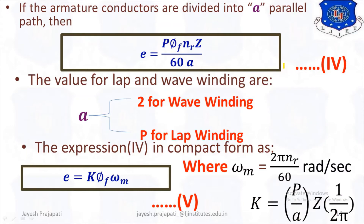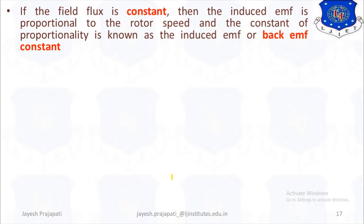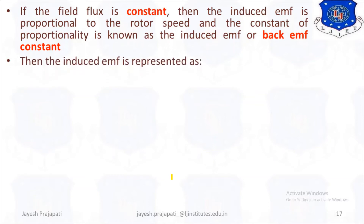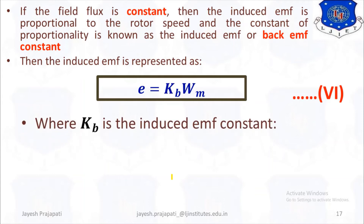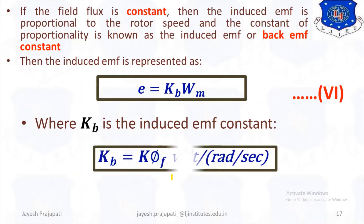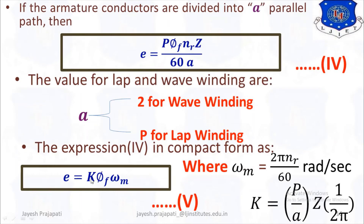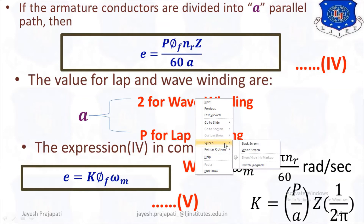If the field flux is constant, the induced EMF is proportional to rotor speed. The constant of proportionality is the induced EMF or back EMF constant KB. We write E equals KB·ωm (equation 6), where KB equals K·Φf, taken as equation 7, and K is the proportionality constant.